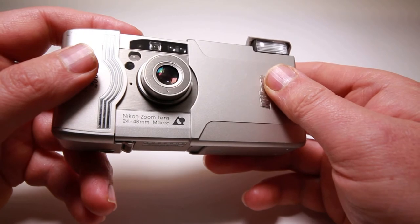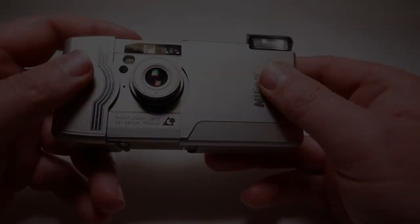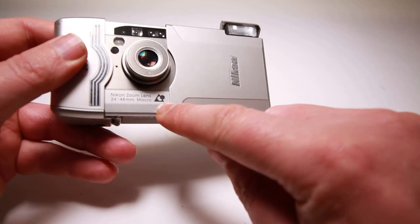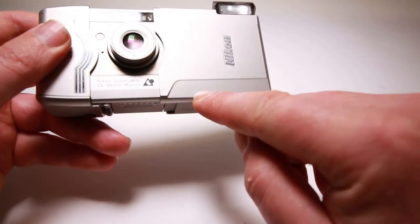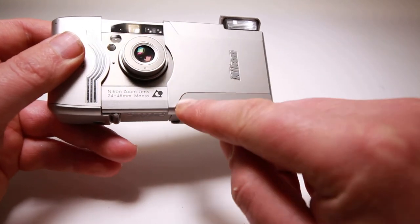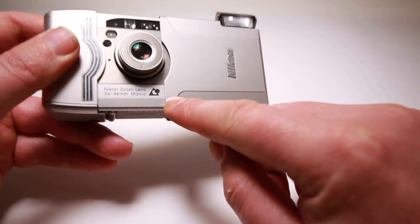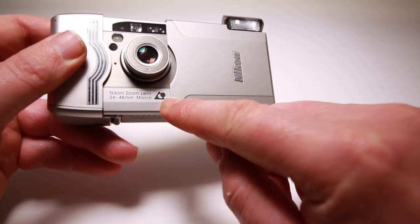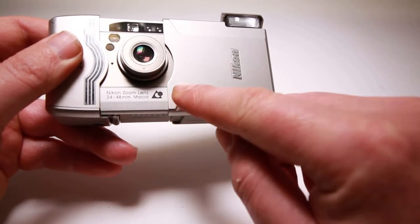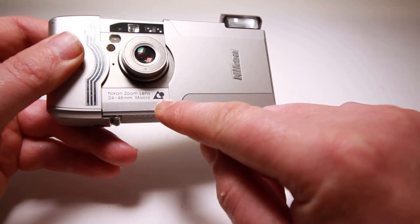As I said, it uses APS film. This camera allows you to zoom in and zoom out - you can do it from 24 up to 48 millimeters on the macro.